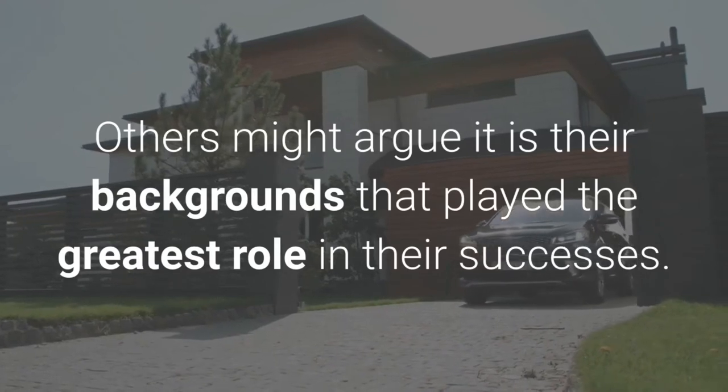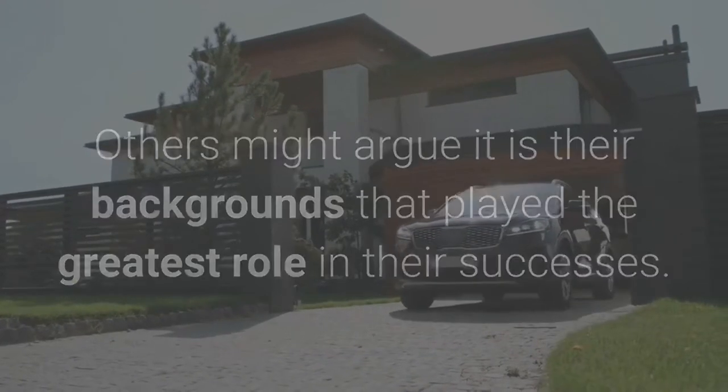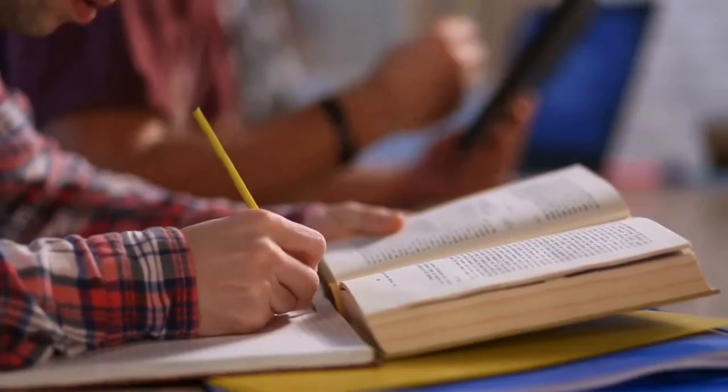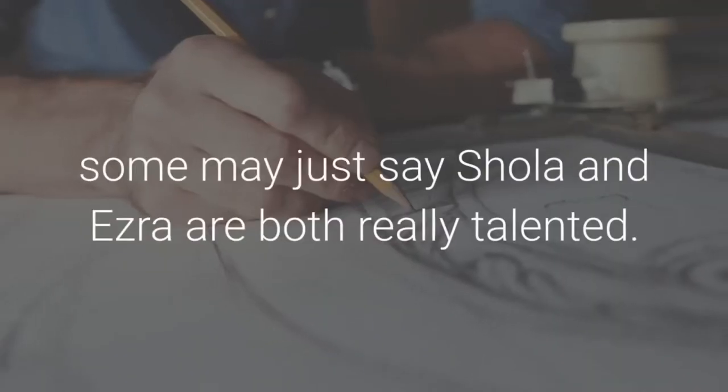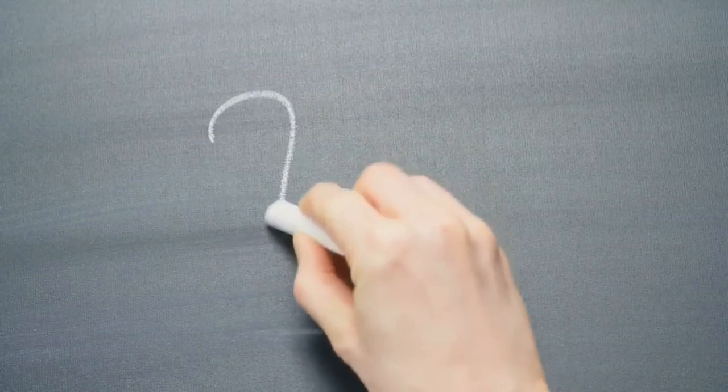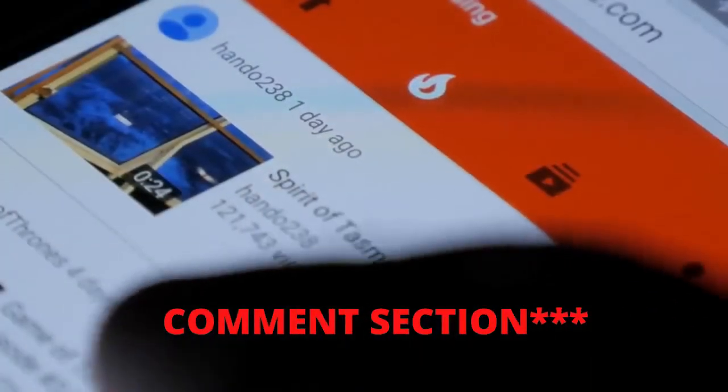Others might argue it is their background that played the greatest role in their successes. Obviously, a child from a poor home finds it difficult accessing quality education and that saves the chance of reaching career potential. Some may say Shola and Ezra are both really selected. But what do you think? Were they just lucky, brilliant, or visionary? We want to know your thoughts, so drop them in the description box of this video.